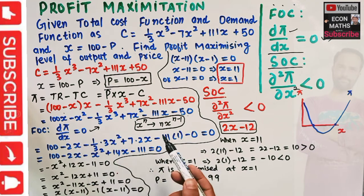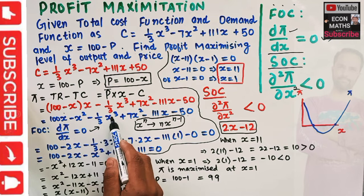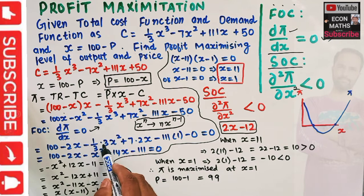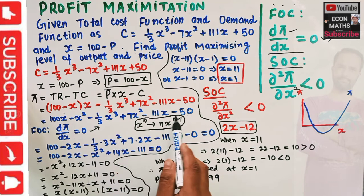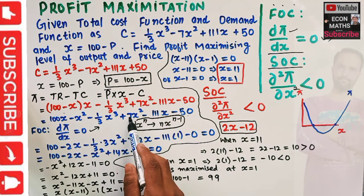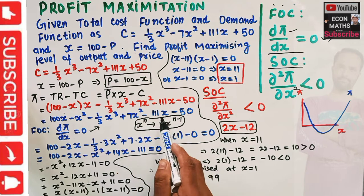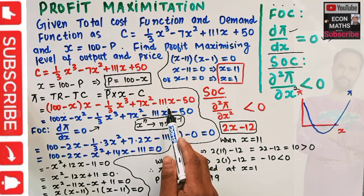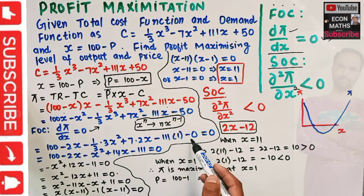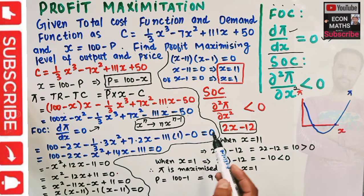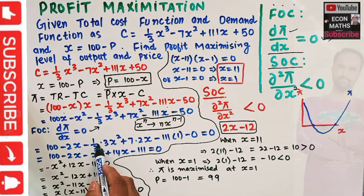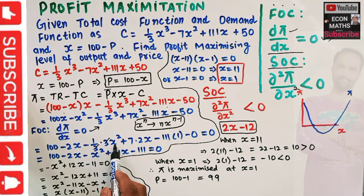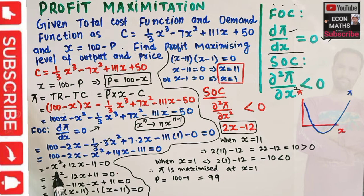Continuing the derivative: the (1/3)X³ term gives X² (the 3s cancel), and 7X² gives 14X. So the first derivative set equal to zero is: 100 - 2X - X² + 14X - 111 = 0. Rearranging: -X² + 12X - 11 = 0, where 14X - 2X = 12X and 100 - 111 = -11.